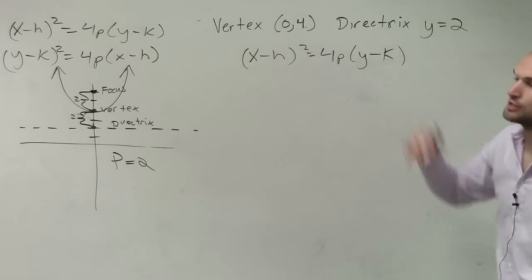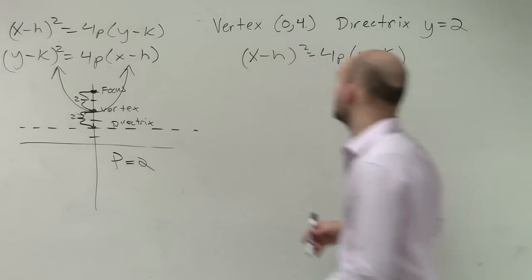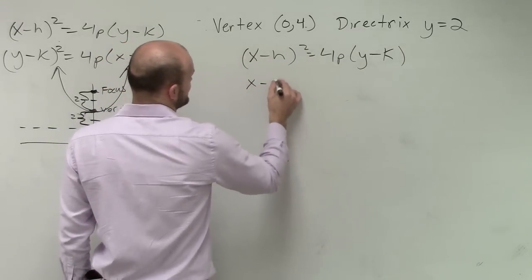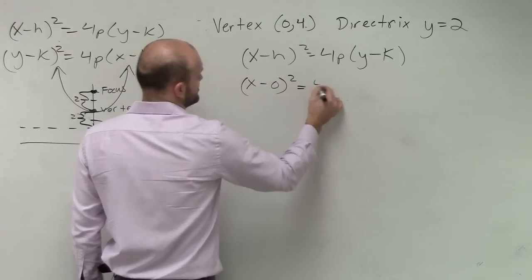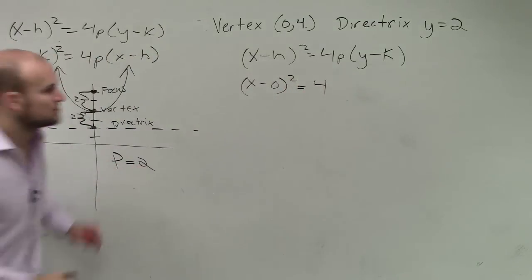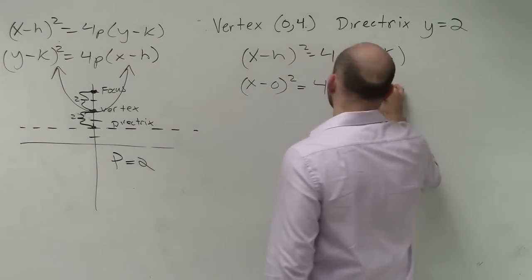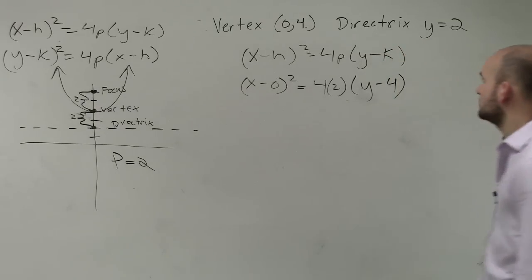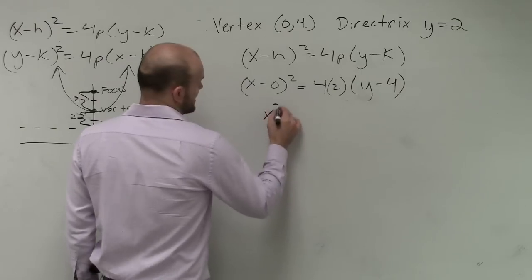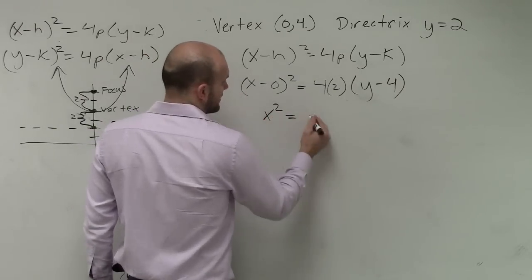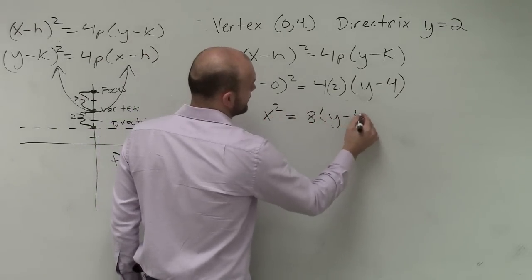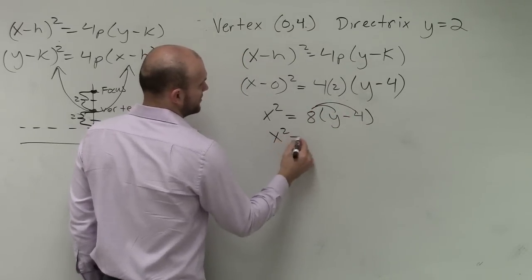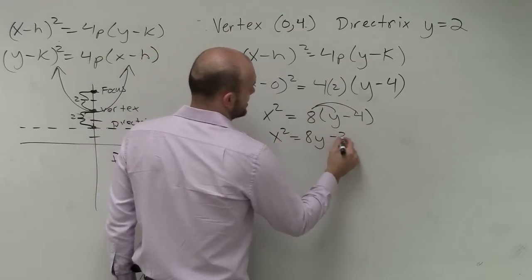We know the vertex is 0, 4. Remember it's opposite 0, 4. So we have (x-0)² = 4 times P, which we said was 2, times (y - 4). Right there. So now we need to just write this in our standard form. So let's say this becomes x² = 8(y-4). Distributive property. x² = 8y - 32.